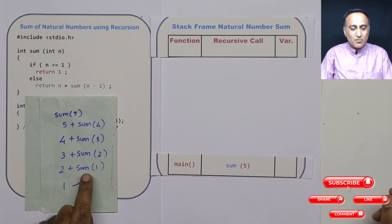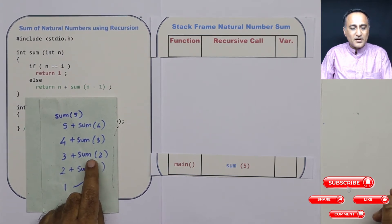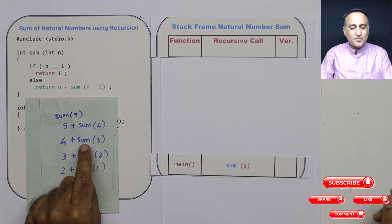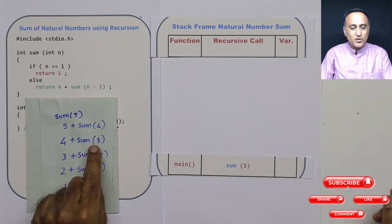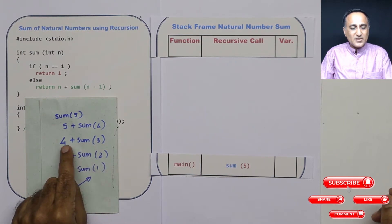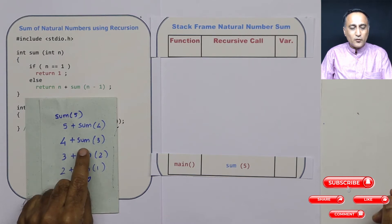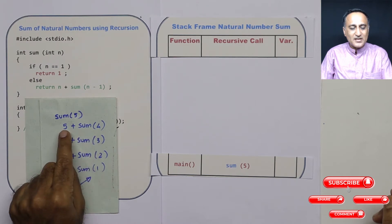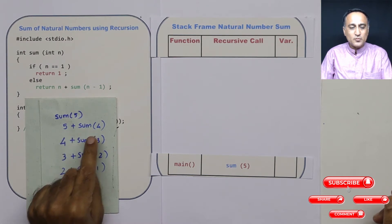Since I know sum of 2 is 3, I can replace that sum of 2 with 3. So 3 plus 3 equals 6, which becomes the sum of numbers from 1 to 3. Now that is 6. So 6 plus 4 is 10, meaning the sum of numbers from 1 to 4 is 10. Now the sum of numbers from 1 to 5 is 5 plus 10, which happens to be 15.